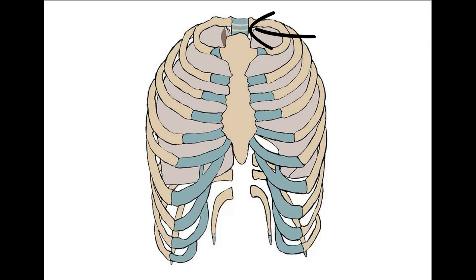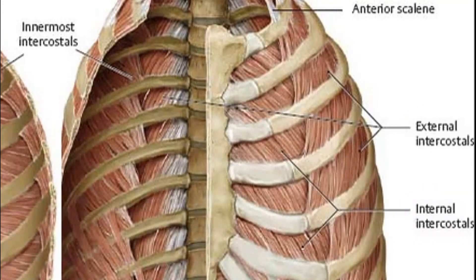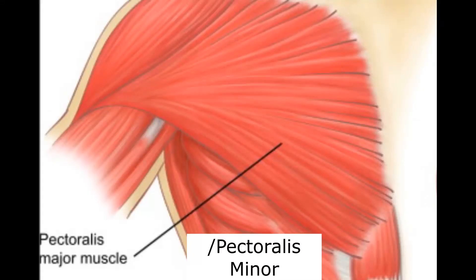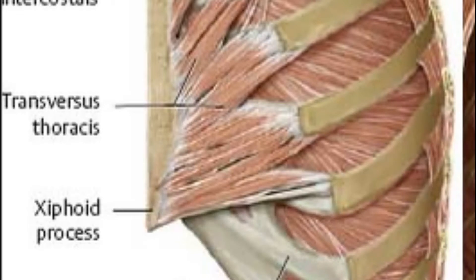T1 to T12. Moving on to the muscles, we've got a mnemonic: 'Indigenous People Sit Together Serving Dinner.' The I in 'indigenous' stands for intercostals — you've got three types: the external intercostals, the internal intercostals, and the innermost intercostals. The P in 'people' stands for the pectoralis muscle, which can be major and minor. S stands for serratus anterior. T in 'together' stands for transversus thoracis.